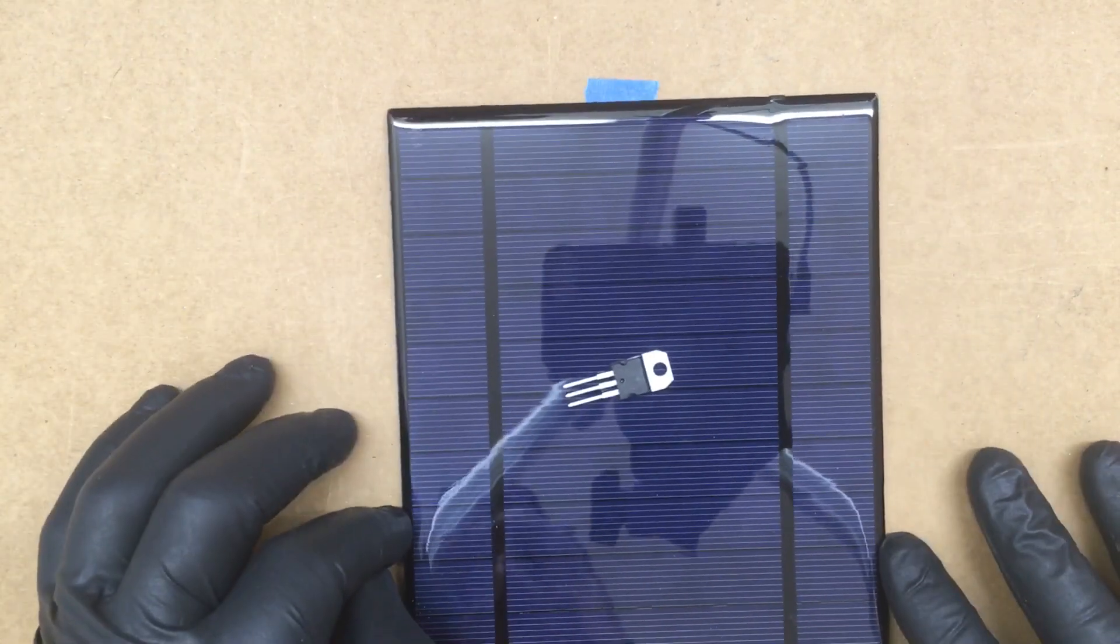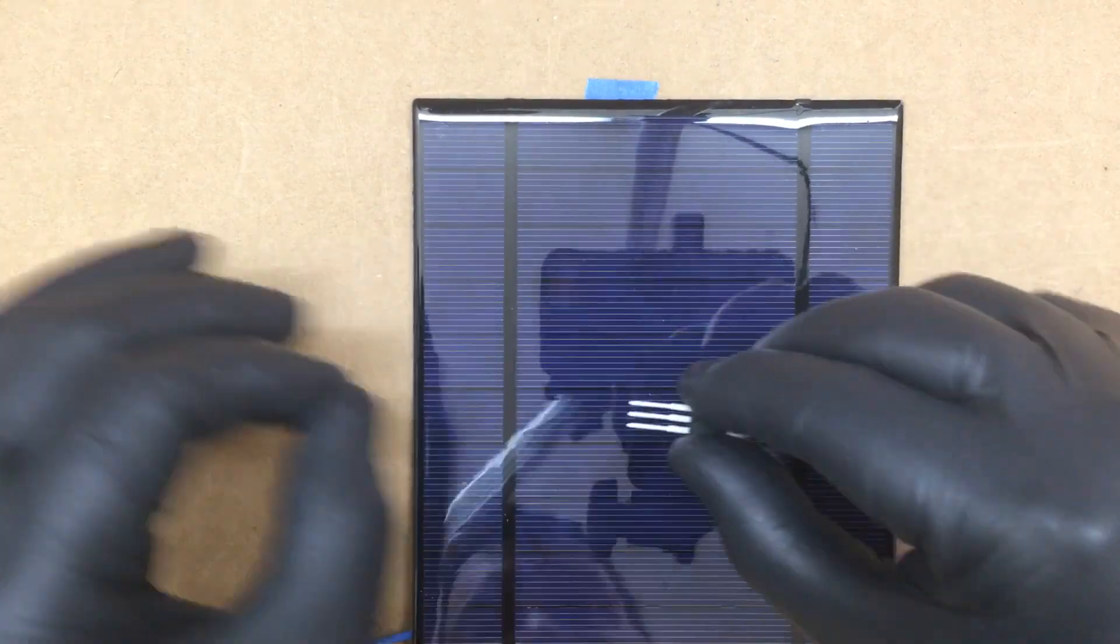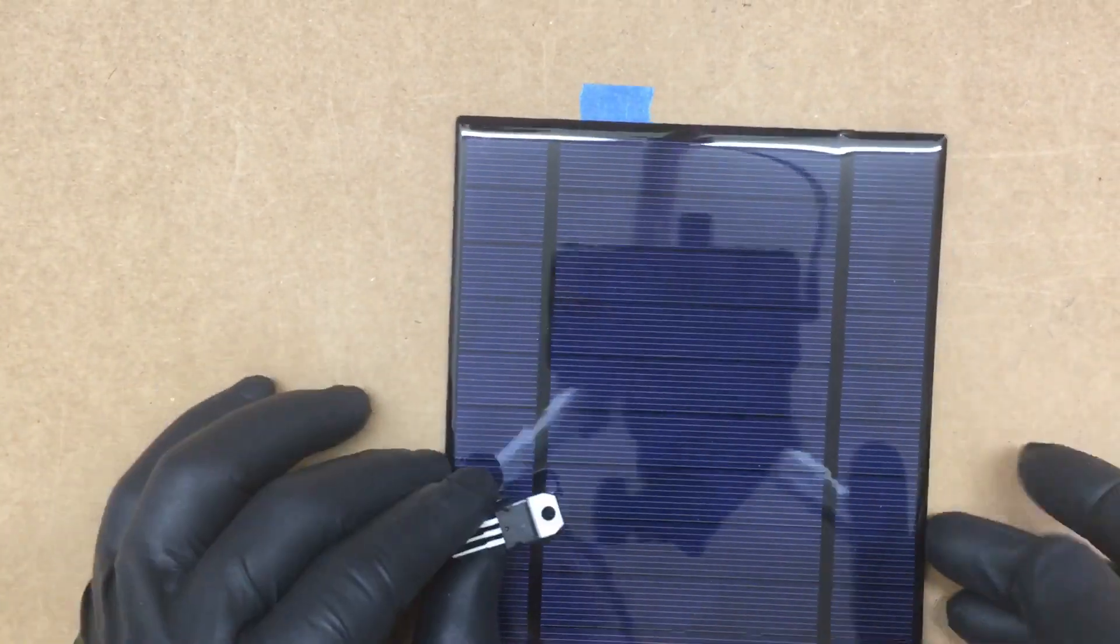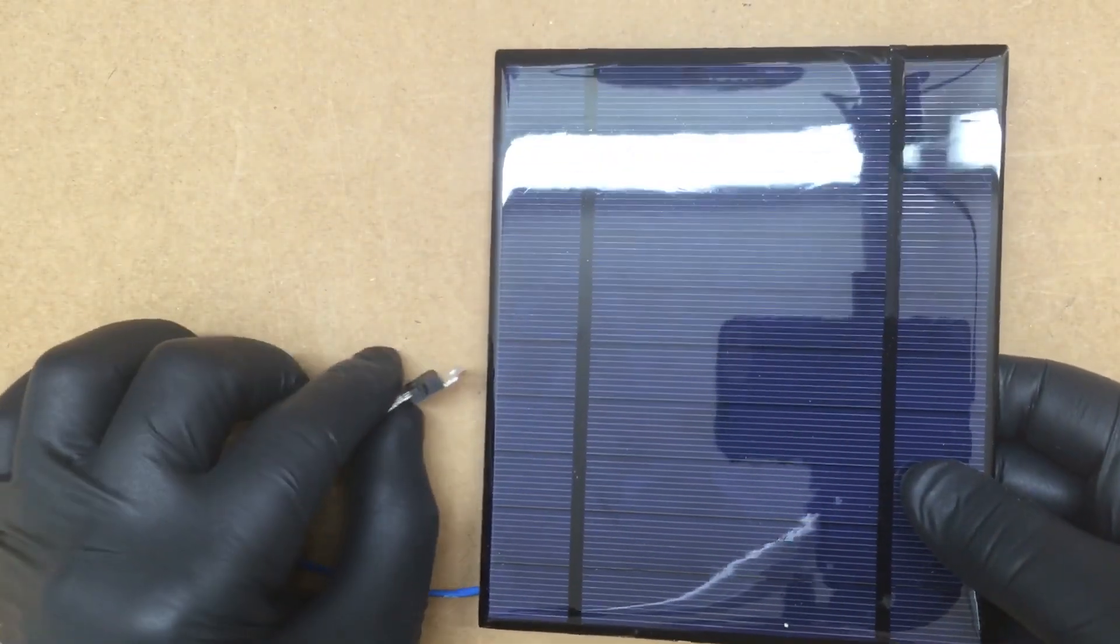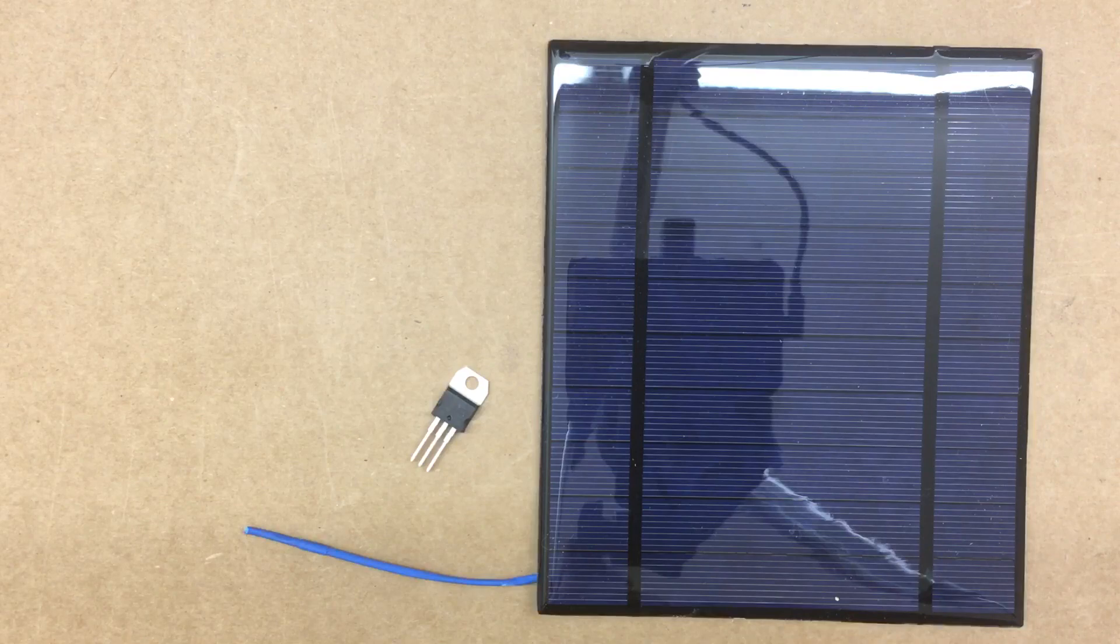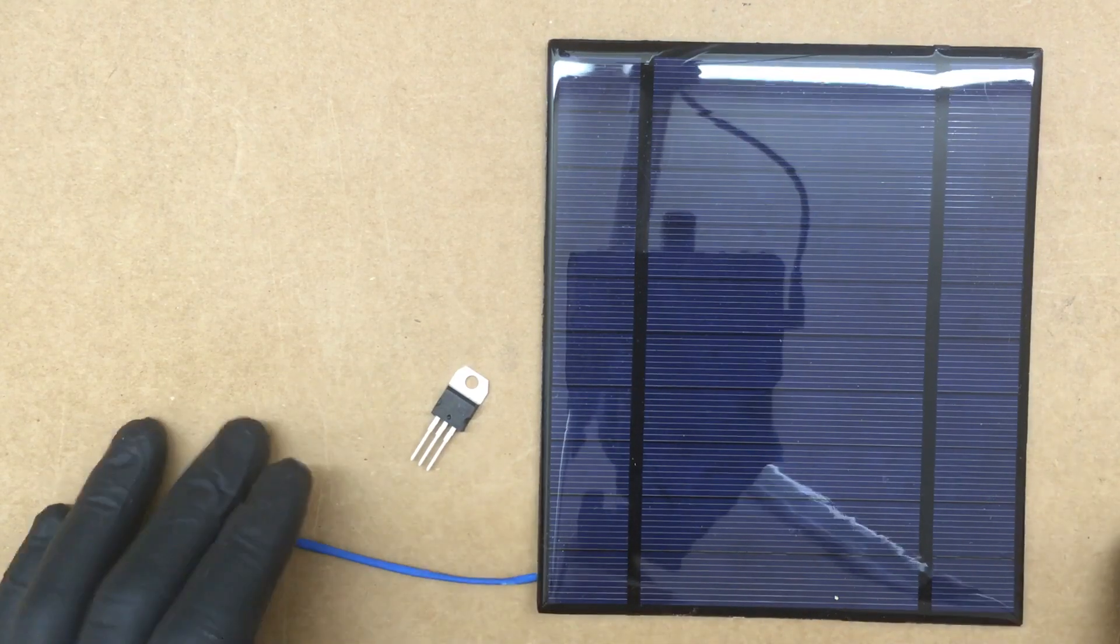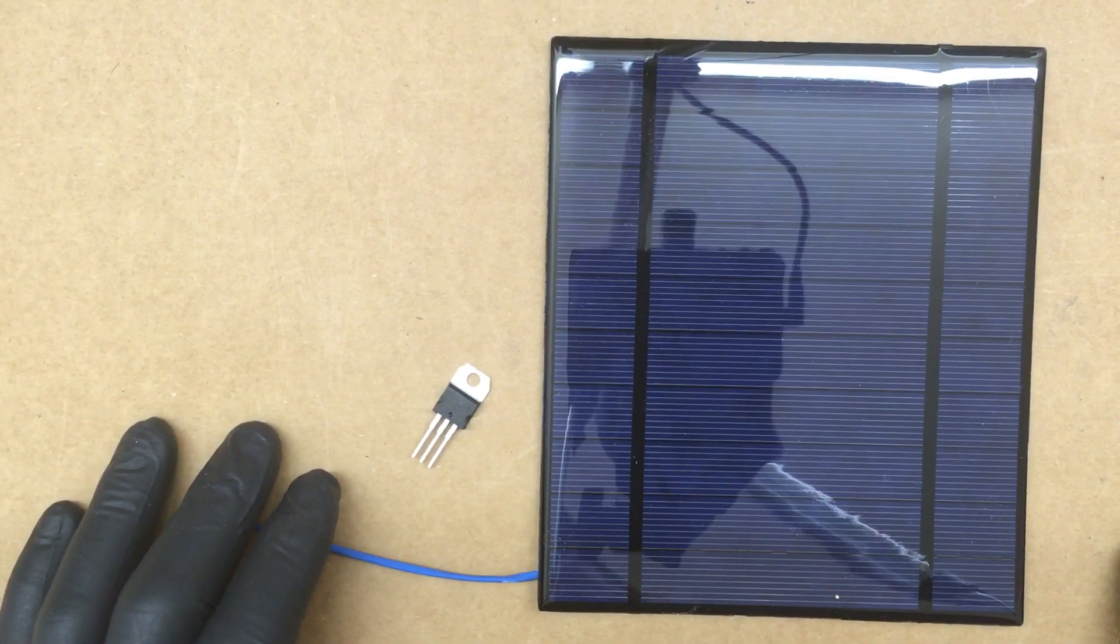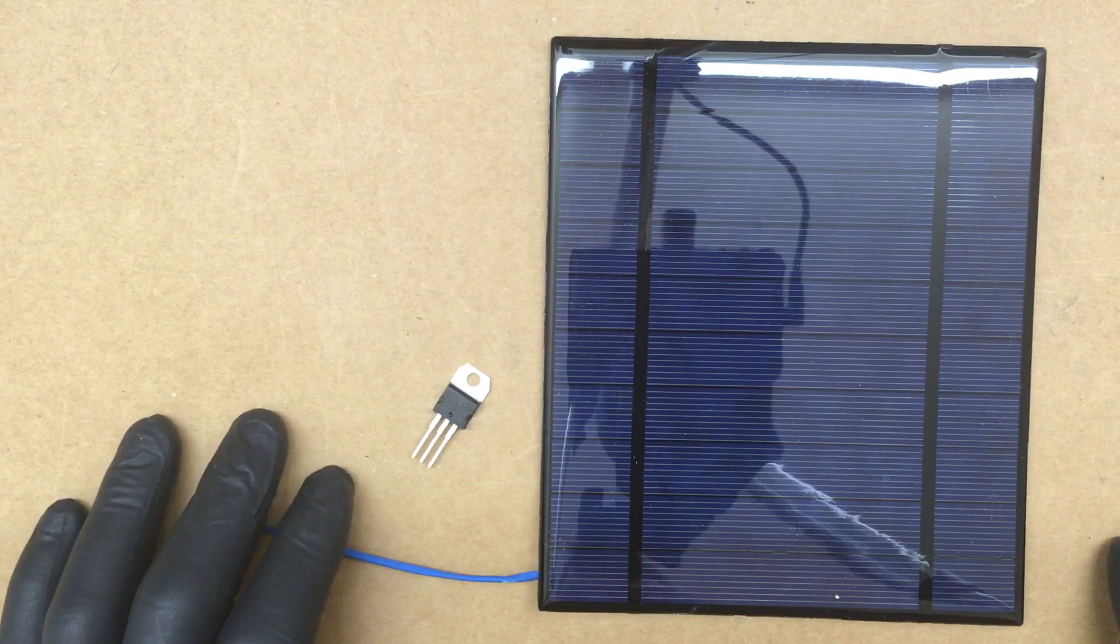We'll use this voltage regulator with an output of 5 volts to hook up to the solar panel here so we can charge a phone or power an ESP or something like that that doesn't take a lot of current or energy.